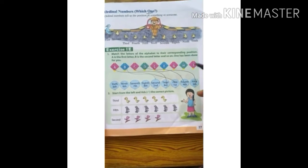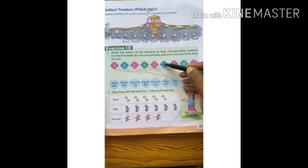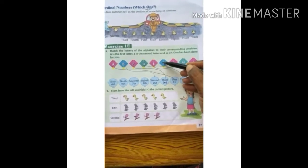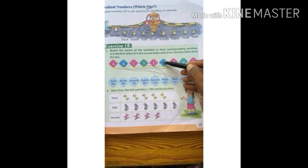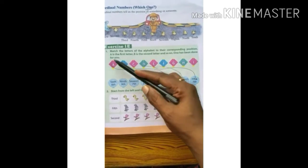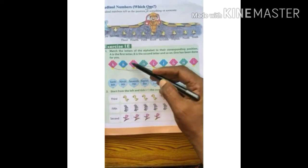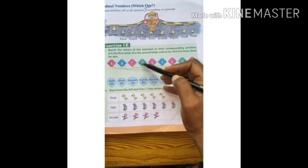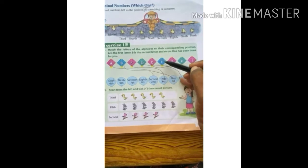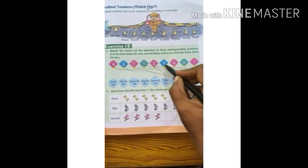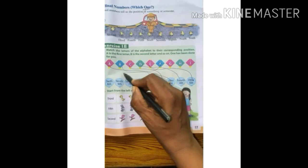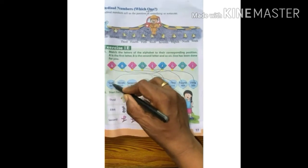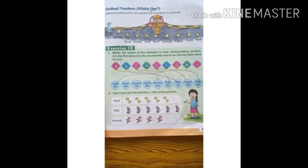Now comes F. F is in which position? 6th position — counting 1st, 2nd, 3rd, 4th, 5th and 6th. So we will find the 6th position and draw the line here. Done.